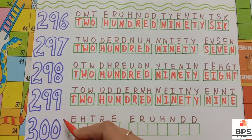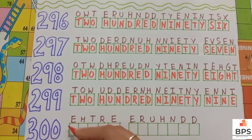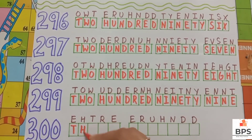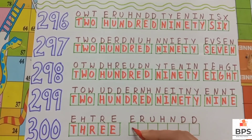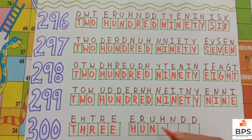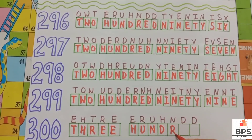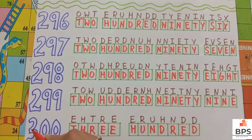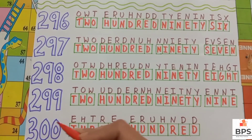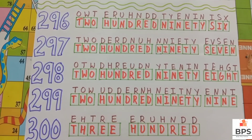Three hundred. Three zero zero. T-H-R-E-E, three. H-U-N-D-R-E-D, hundred. Three hundred. Thank you.